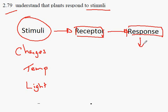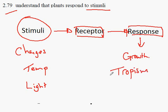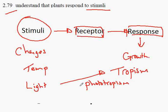The responses often take the form of growth. This type of response — growth in response to a stimulus — is called a tropism. Tropisms that involve light are called phototropism. Another tropism involves a response to gravity, which we call geotropism.